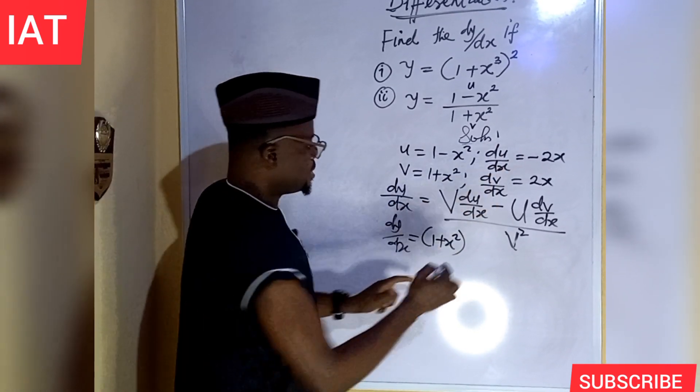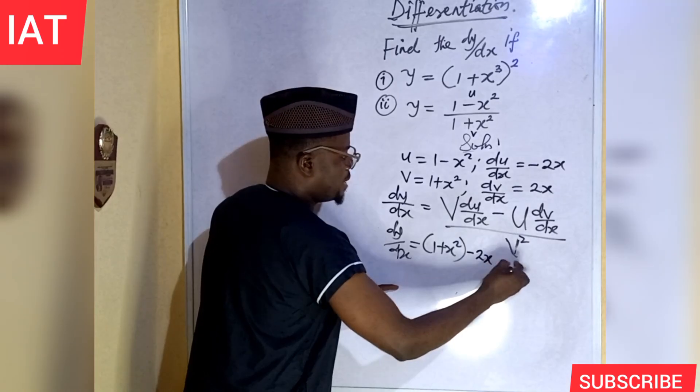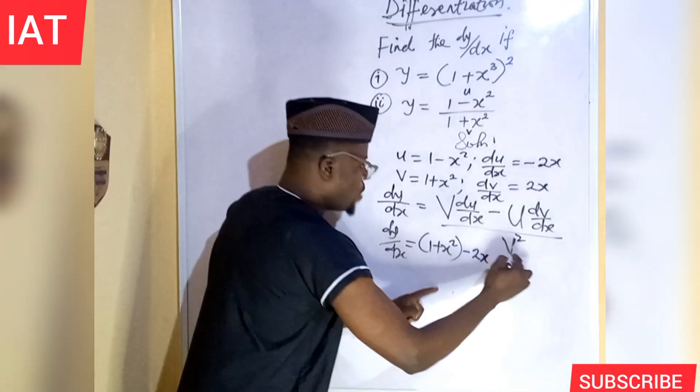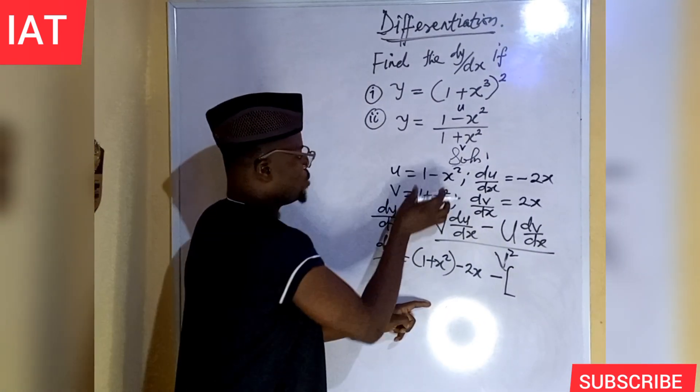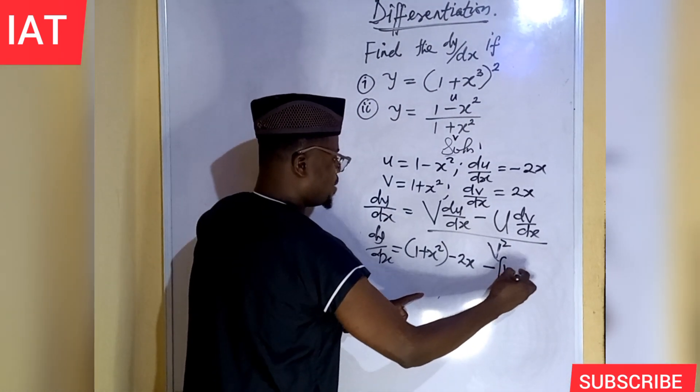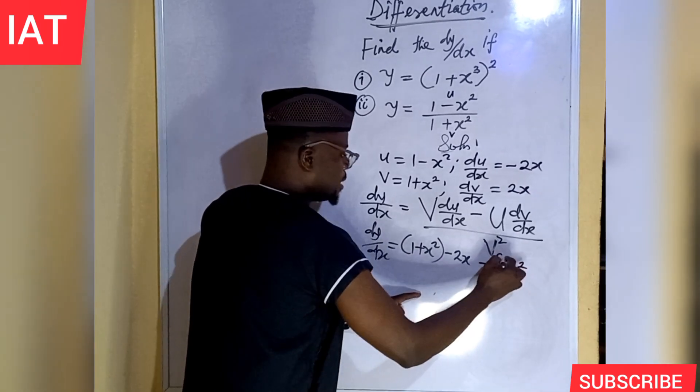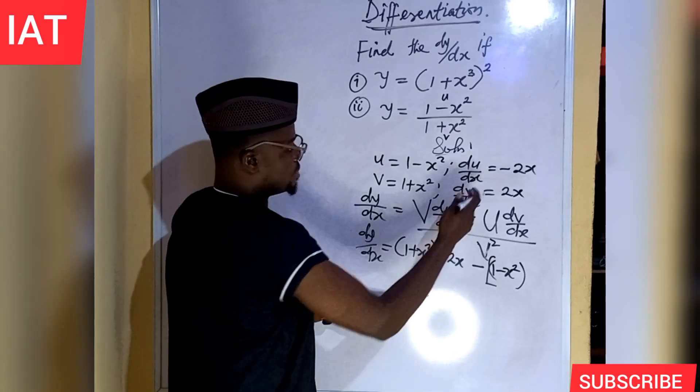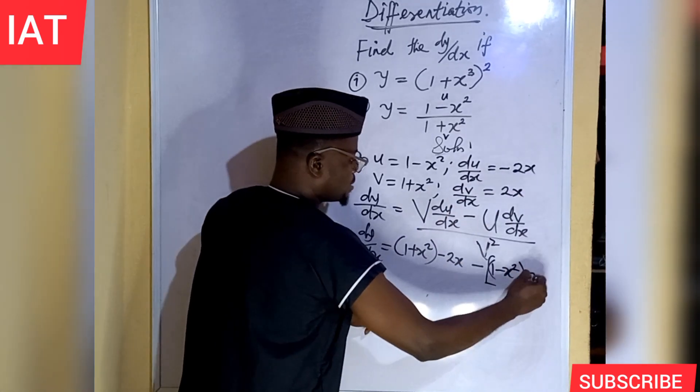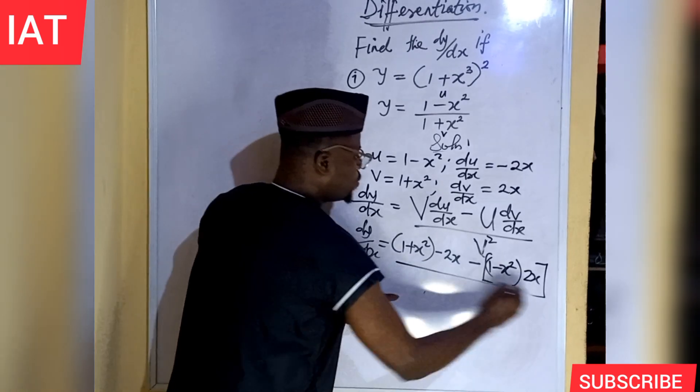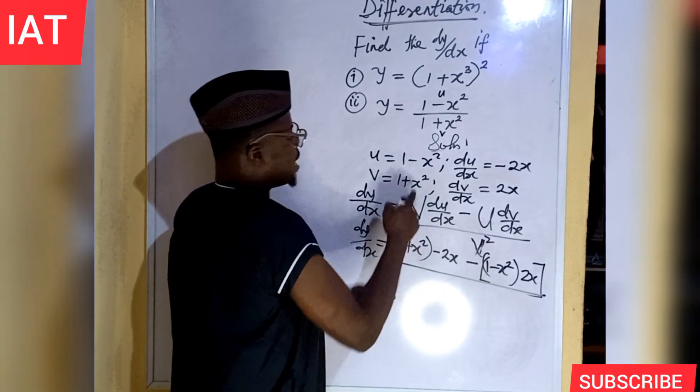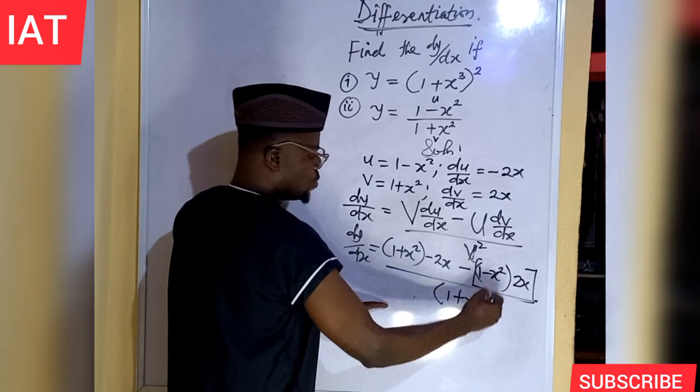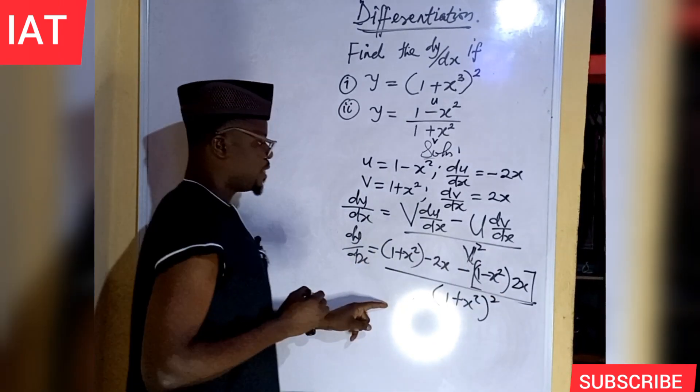So, now dy over dx will be equal to what is our v? Our v is 1 plus x squared. And what is du over dx? Du over dx is minus 2x. Minus. What is our u? Our u is, we have to open a parenthesis so that it will enter the value of u which is 1 minus x squared. And then, what is dv over dx? The dv over dx is 2x. Let's close the parenthesis. All over, what is our v? Our v is 1 plus x squared. And v is squared here. So, we have to square it here.